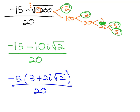And now that the expression is factored, now we can reduce the negative 5 and 20. Dividing both by negative 5, we'll leave a negative 4 in the denominator.